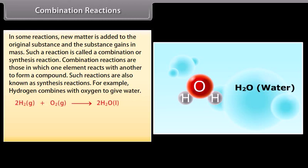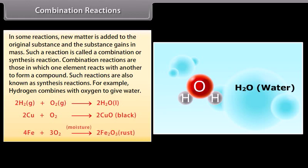2H2 plus O2 gives 2H2O. 2Cu plus O2 gives 2CuO. 4Fe plus 3O2 gives 2Fe2O3, rust.